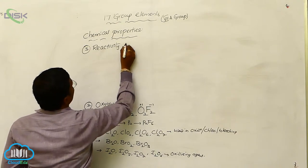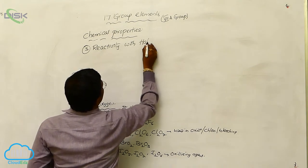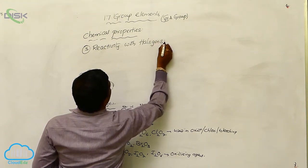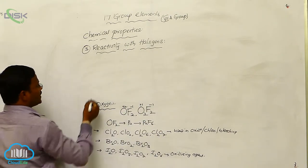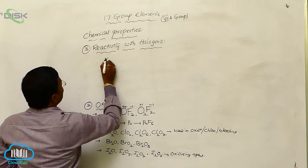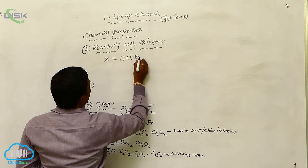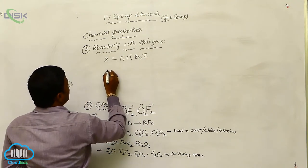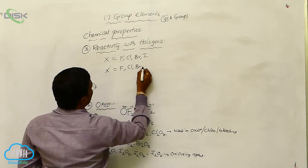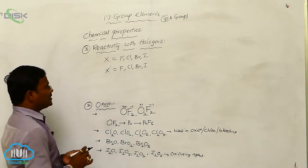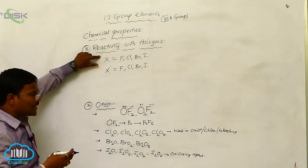Reactivity with halogens. Once again, one halogen atom X equals fluorine, chlorine, bromine, iodine. Here X' also equals fluorine, chlorine, bromine, iodine. In halogens, one halogen atom can react with another halogen atom.